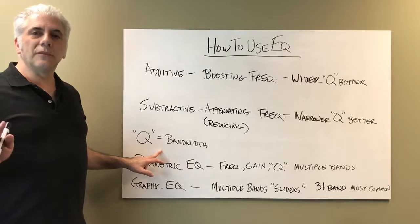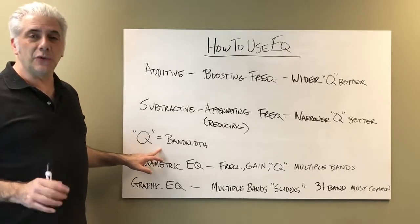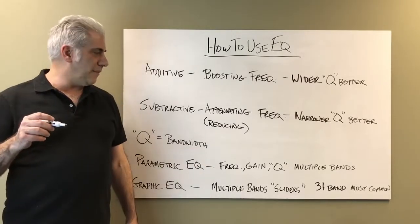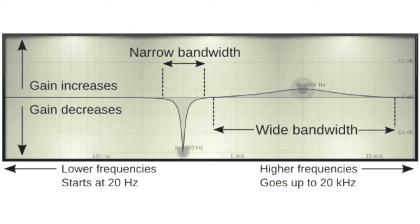There are some terms we need to discuss, like what is Q? Q means the bandwidth. There's a bell curve — the diagram shows the difference between a wide bandwidth Q and a narrow bandwidth Q. The wide bandwidth Q has a center point of 3k, or 3,000 Hz, and the narrow bandwidth has a center point of about 400 Hz. As the arrow goes up, gain increases; downward, gain decreases. The narrower the Q, the fewer frequencies affected; the wider the Q, the more frequencies affected.